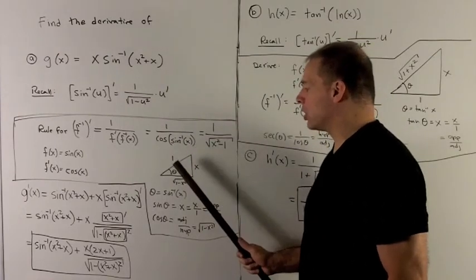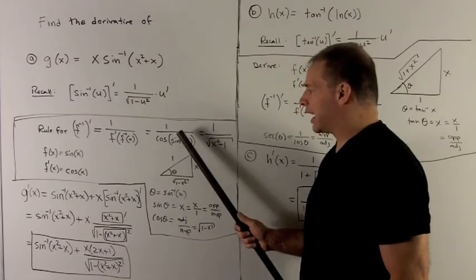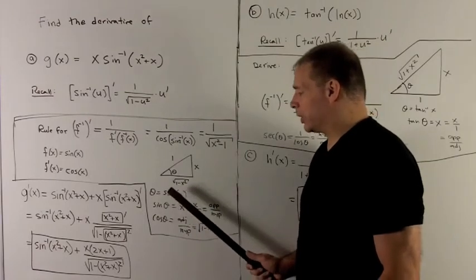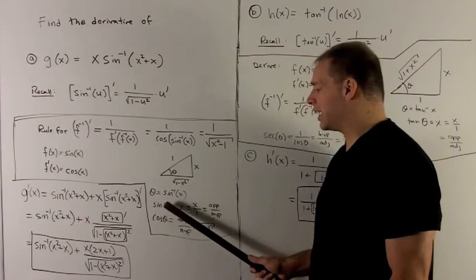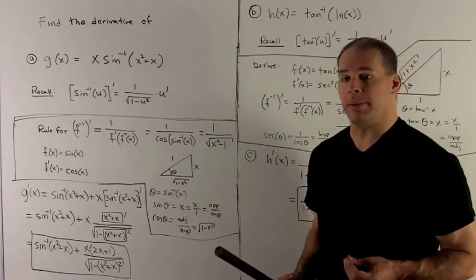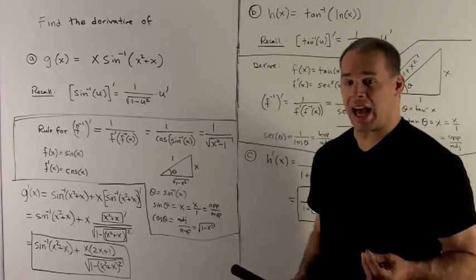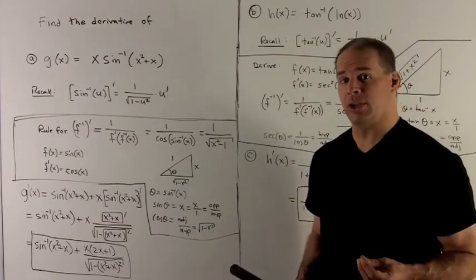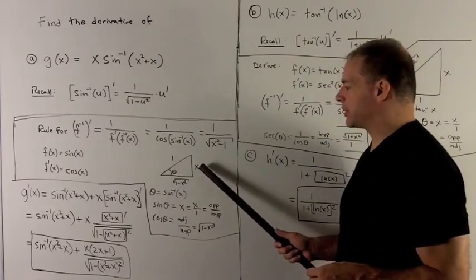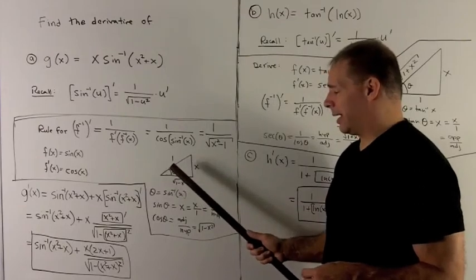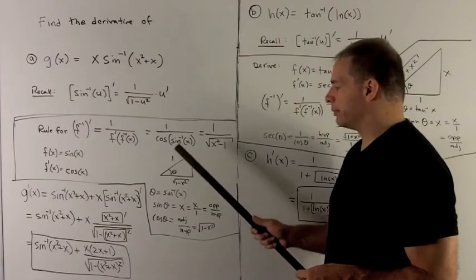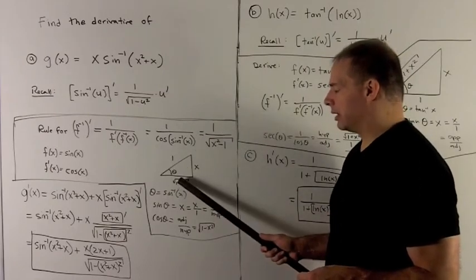I set up a right triangle. I write the inside out as theta equal to sine inverse of x. We can push the inverse sine to the other side, which says sine theta equals x. I write that as x over 1, so I can work with the right triangle — sine is opposite over hypotenuse. So our opposite is x, our hypotenuse is 1, and by the Pythagorean theorem, radical 1 minus x squared gives the length of the other side.